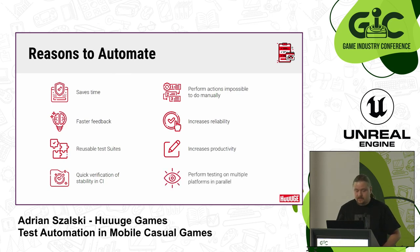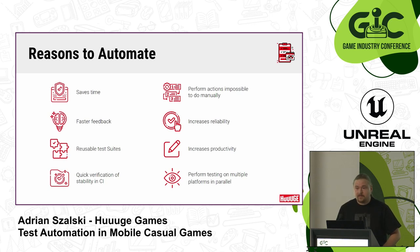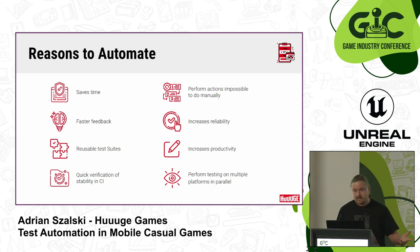A well-written test automation framework can run on multiple platforms in parallel, be it web, iOS or Android. In a manual circumstance, you either have three people working on regression testing for these platforms, or one very unlucky one. With a well-maintained device farming environment, these tests can just run at the same time on all three.